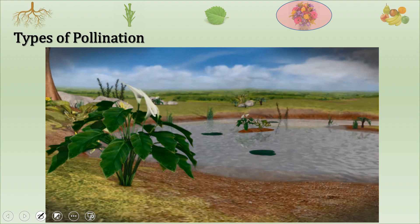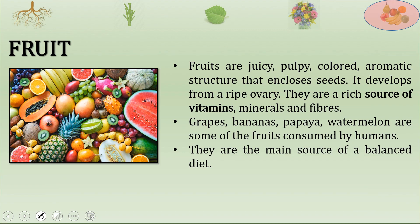Now let us see the next part of our module: fruits. Fruits are juicy, pulpy, colored, aromatic structures that enclose seeds. Sometimes one seed is there, sometimes many seeds are enclosed within them. Fruit develops from a ripe ovary. Fruits are a rich source of vitamins, minerals and fibers. We like many fruits like grapes, banana, papaya, and watermelon. They are the main source of a balanced diet.